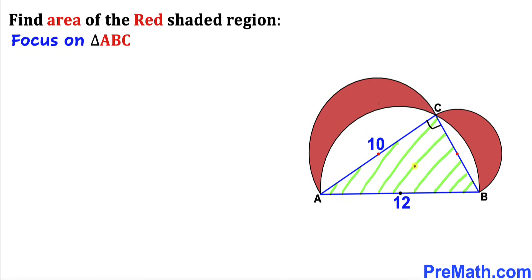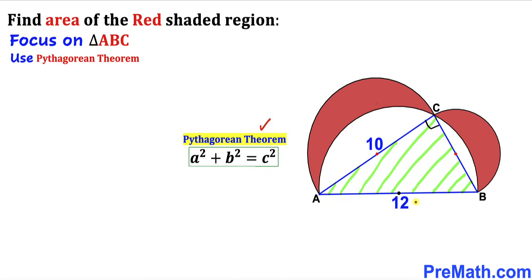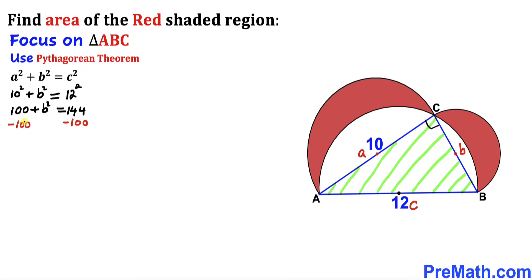Let's focus on triangle ABC whose side lengths are 10 and 12, and calculate side length BC using the Pythagorean theorem: A squared plus B squared equals C squared. Let me call the longest leg side C, and the other two sides A and B. Filling in the blanks: A is 10, so we get 10 squared plus B squared equals 12 squared. Now let's subtract 100 from both sides.